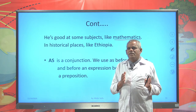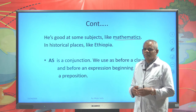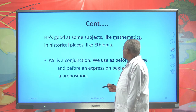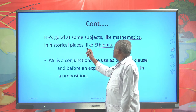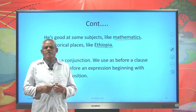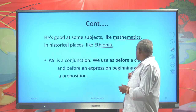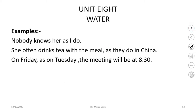As functions differently. Similarly to like, it can be followed by a noun or a pronoun. But as is also used as a conjunction — before a clause, and before an expression beginning with a preposition. As has different functions in such contexts. For example: 'Nobody knows her as I do.' Here it is used before a clause.